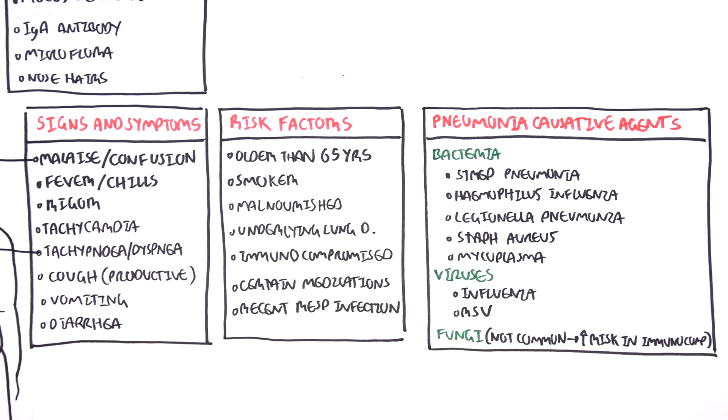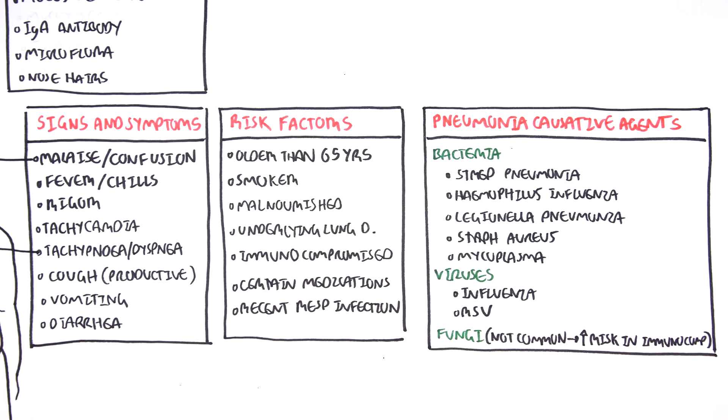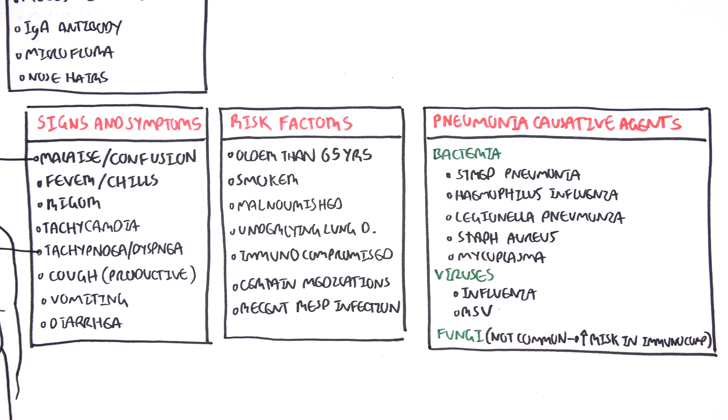Viruses include the influenza virus, respiratory syncytial virus, and cytomegalovirus. Okay, so those are some examples of the big players in pneumonia, the big causative agents in pneumonia.